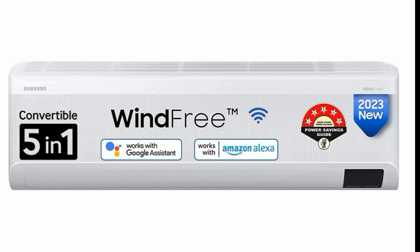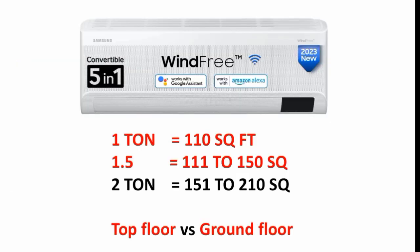The AC's full figure: first, you need to choose the right tonnage. Normally, you can choose AC based on room size. For a room up to 110 square feet, choose a 1-ton AC. For 150 square feet, choose a 1.5-ton AC. For 200 square feet, you can also choose a 1.5-ton AC.